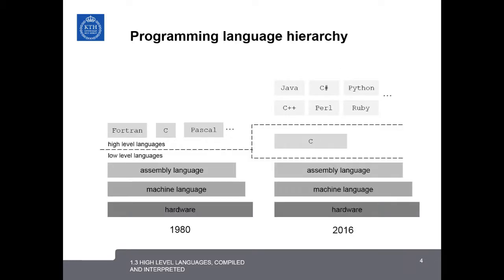When C was written in the 1970s, it was considered a very high-level language. In this diagram, we can see that in 1980, languages like Fortran, C, and Pascal were considered high-level languages at the time.